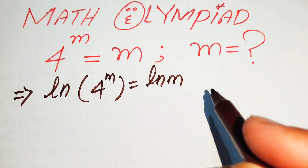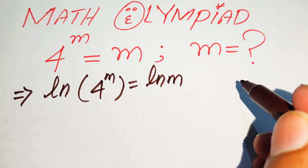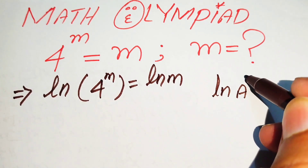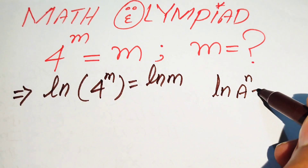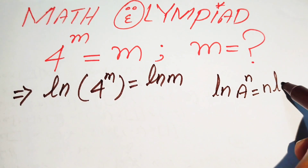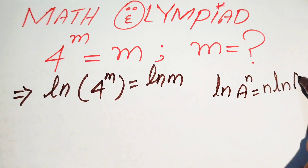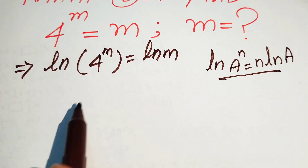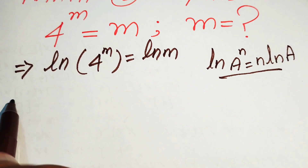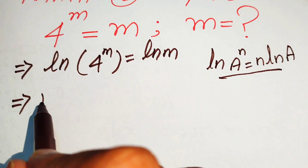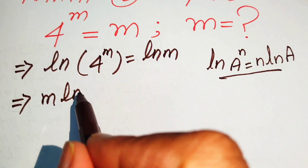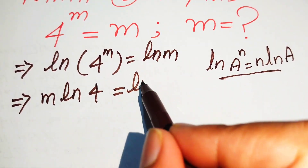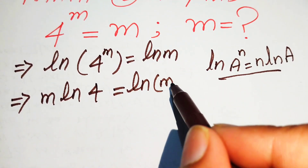Now in the next step we need to use the nice property of logarithm. We know that log of a to the power of n can be written as n times log a. Using this property on the left hand side, it will be written as m times log 4 equals log of m.